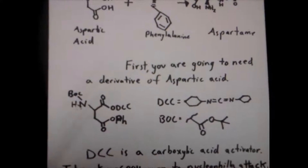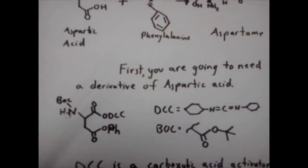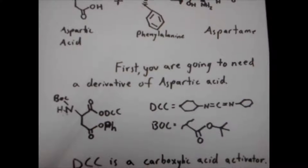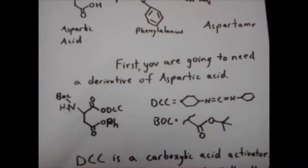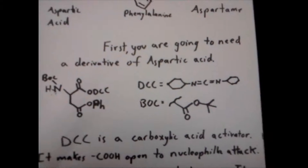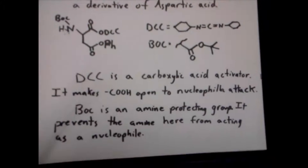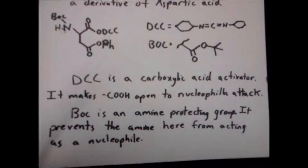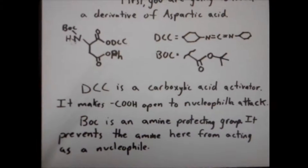Our first step is making the derivative of aspartic acid. My chosen derivative is aspartic acid with a Boc protecting group on the amine and a DCC-activating group on the top carboxylic acid. There is also a phenyl ester on the bottom carboxylic acid, because that is going to prevent a later reagent exposure from turning that carboxylic acid group into a different kind of group.